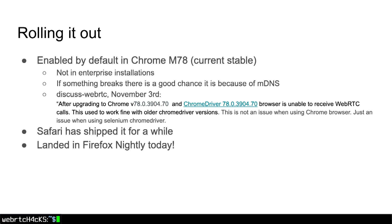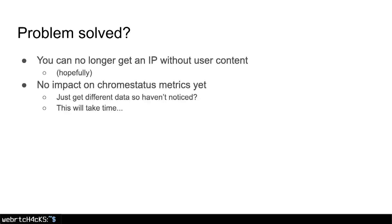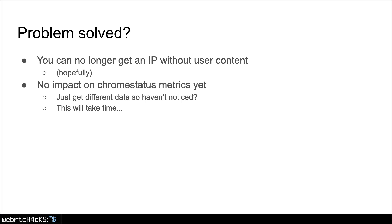Safari has been shipping this for a while and it seems to work well. Just earlier today I received news that it landed in Firefox Nightly, so we have pretty good coverage among browsers now. Did we solve the problem? The goal is to no longer get an IP without user consent, and I think we've mostly achieved that, at least on the desktop. But we don't see any impact on Chrome status metrics yet — it's still at 4%. Those sites just get different data now, so maybe they haven't noticed. It will probably take a couple of months to see any impact.